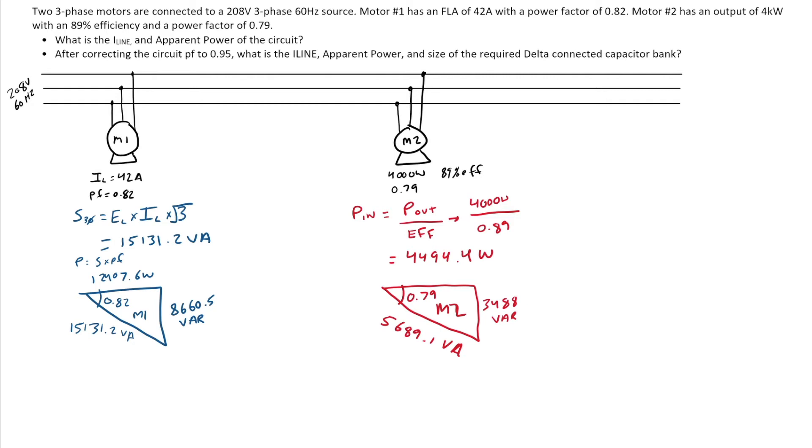Now what I want to do is I want to combine those two motors to make a total. So what we know when we're calculating our total is that the power total is equal to power of motor one plus the power of motor two. Our watts will add up. So I add up 12,407.6 plus 4,494.4, and I get exactly 16,902 watts.